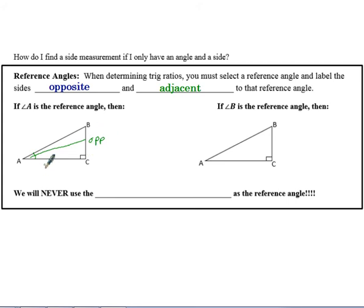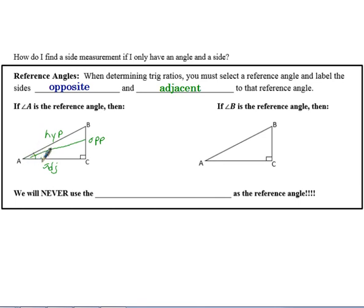The adjacent side is the side that lays flat near the angle, labeled ADJ. The third side is always the hypotenuse. A lot of students struggle with identifying the adjacent, so I always recommend labeling the hypotenuse first — it's always opposite the 90 degrees. Then opposite is the one opposite our given angle. That's how we label our triangle.